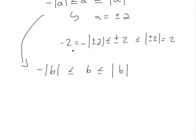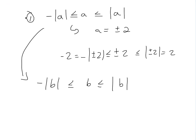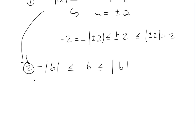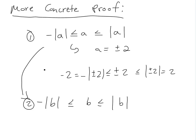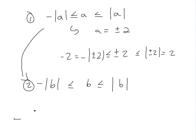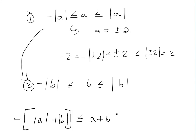We have these two inequalities, one and two. If we add them up — adding the left sides and right sides together — we get: negative absolute value of A minus absolute value of B is less than or equal to A plus B, which is less than or equal to absolute value of A plus absolute value of B.